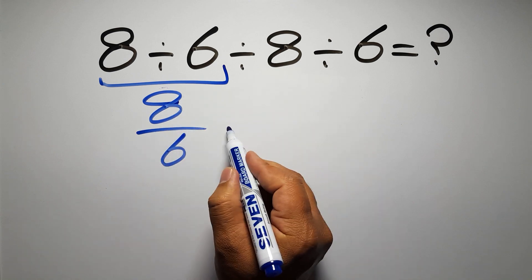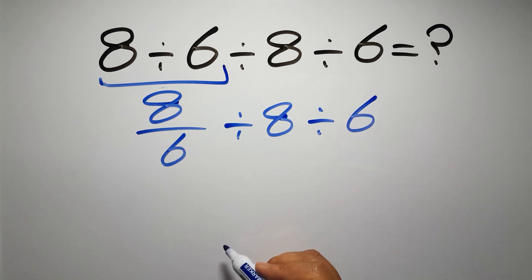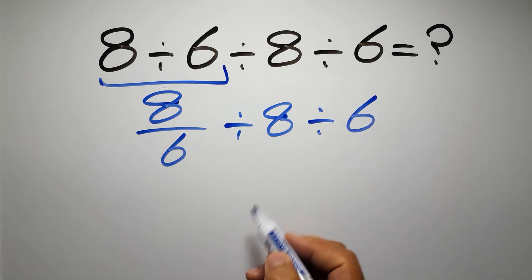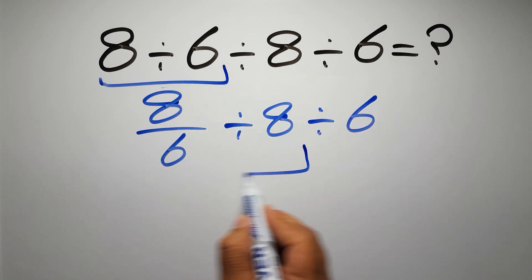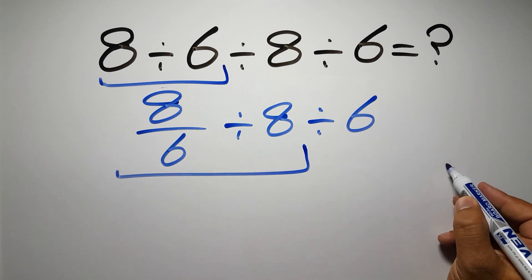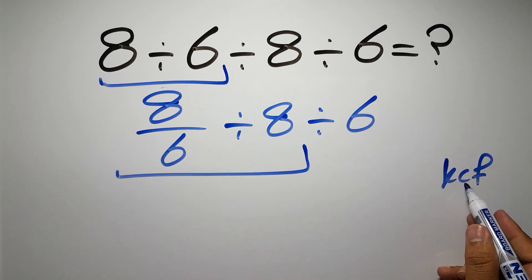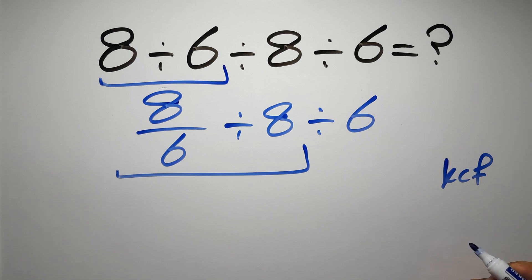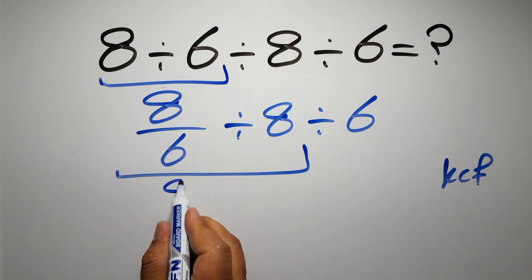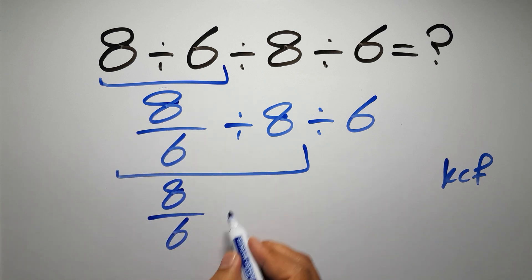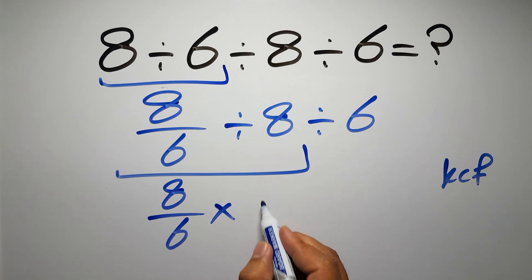So 8 over 6 divided by 8, and divided by 6. First we have to do this division: 8 over 6 divided by 8. According to the KCF rule — K stands for Keep, C stands for Change, and F stands for Flip — we keep the first fraction, change the division to multiplication, and flip the second fraction.